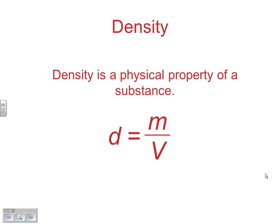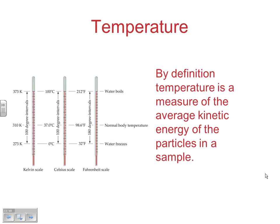Density is another derived unit — the ratio of mass over volume — and we'll use it continuously throughout the year. Temperature is also frequently used; there are three scales: Kelvin, Celsius, and Fahrenheit. Temperature is the measure of the average kinetic energy of particles in a sample, which relates to how fast particles are moving.